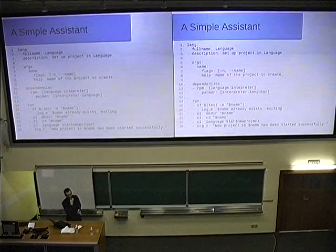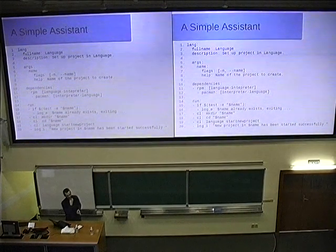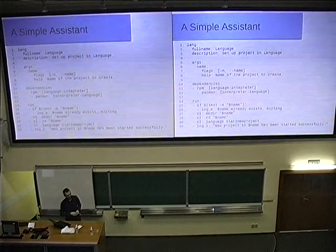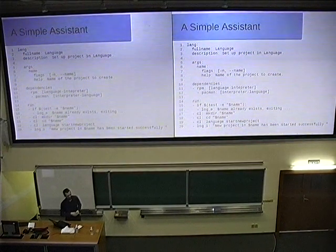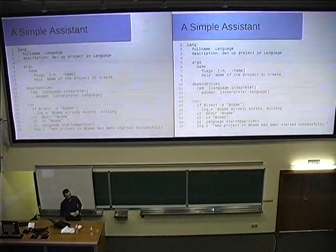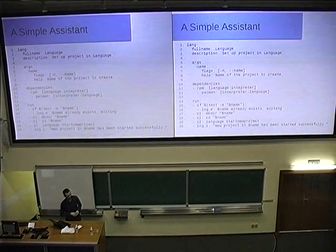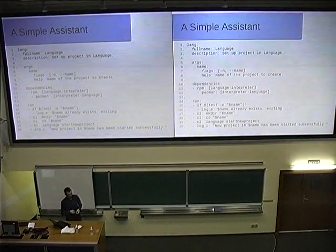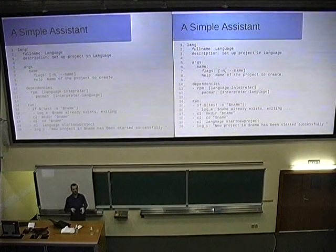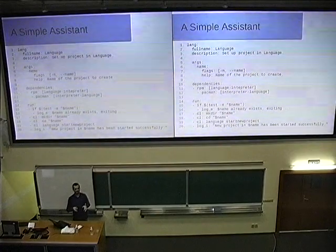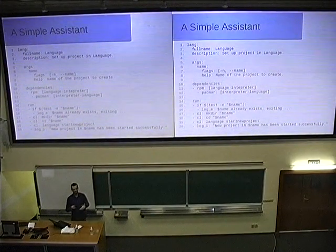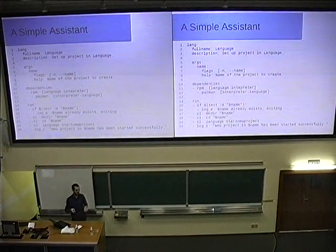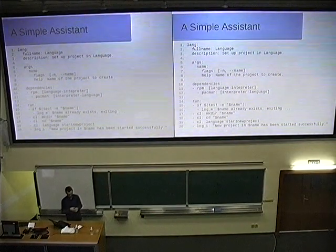But I think why we decided to do this, why we decided to do the DSL is that initially when we started developing DevAssistant, we wanted to write these assistants in Python, but that was like an uncrossable line for people from some other languages. I won't name Ruby and Node.js. So we wanted to provide something that would be language agnostic and also it has some more advantages. Like for example, we have central logging that goes either to the command line or to the GUI.